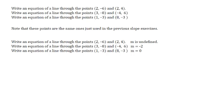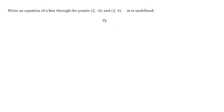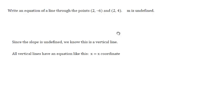Write an equation of lines through given points. Notice that these are the same points we just used when we found the slope, so we know the slopes of these three lines are undefined, negative 2, and 0. For the line through (2, negative 6) and (2, 4), where slope is undefined, we know this is a vertical line. All vertical lines have an equation of the form x equals the x-coordinate. If you observe both points, in both cases x equals 2, so the equation of this line is x equals 2.